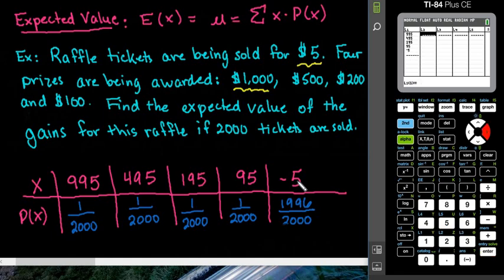After we put in our gains into L1, we are going to put in our probabilities into L2. So I would simply put in 1 divided by 2,000, and notice that when I do this, it converts it to 5e-4.